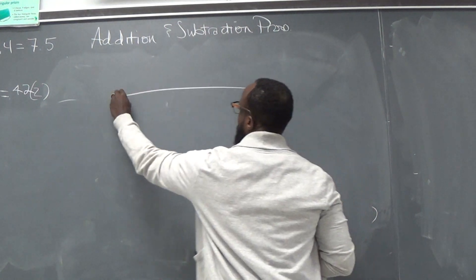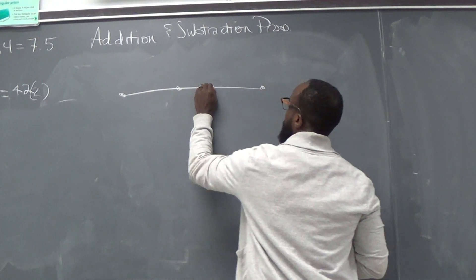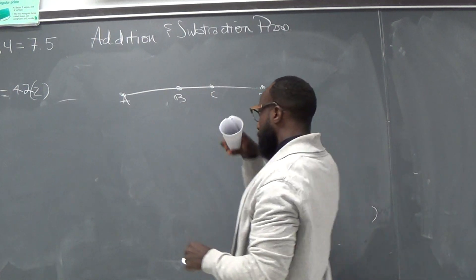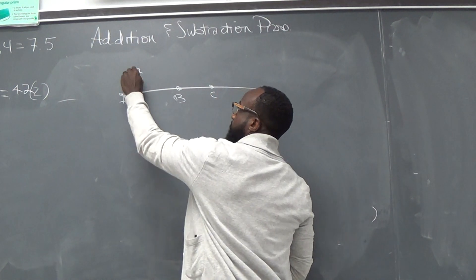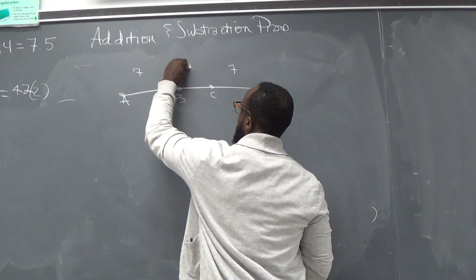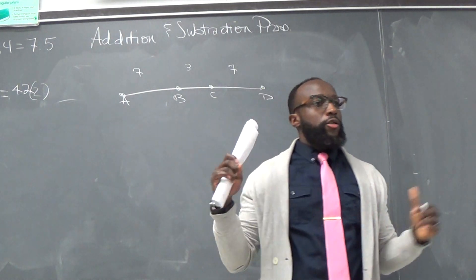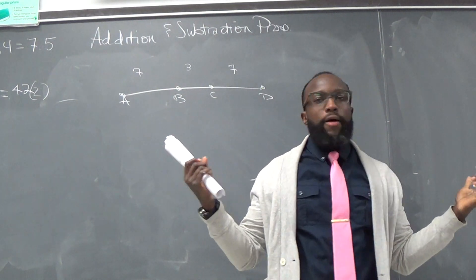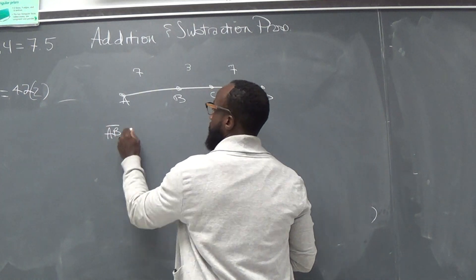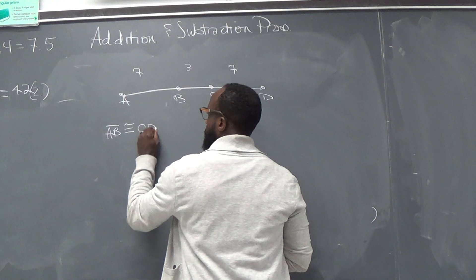So for instance, if we have this segment here — this is A, B, C, and D. If I say AB is 7, and I say CD is 7, and I say BC is 3, straight off the bat we see that segment AB is congruent to segment CD.